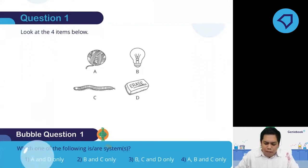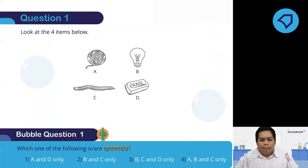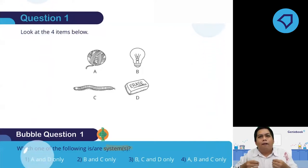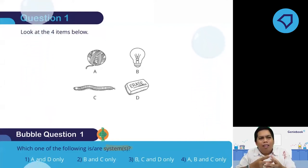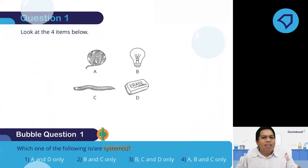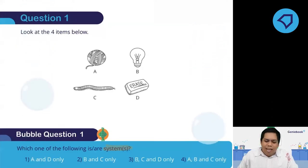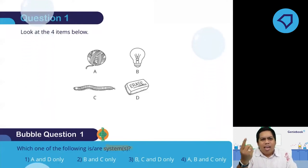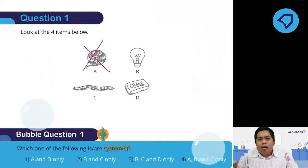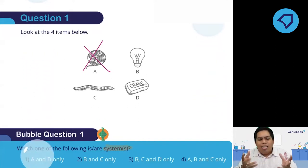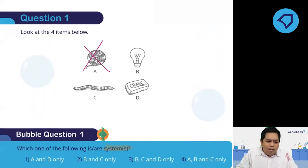Take note of what the question is asking — it's asking for a system. Remember, systems are made out of parts. If you look at A, it's just a ball of thread or ball of yarn — made out of one part, the yarn itself. So therefore it is not a system. For B, it's a light bulb. A light bulb is made out of many parts — the glass cover, the filament, the metal tip and so on — so this is definitely a system.